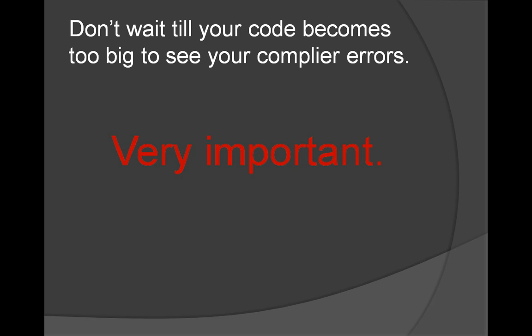This is a very important point — more important than any of the points we have discussed so far. Don't make huge programs and then compile. Make a small program, compile it, make sure it works fine, and then build on top of it. After every five or six lines of code — maybe even less — you should compile the code and see if it compiles fine. If you follow this one single rule, you will be alright.